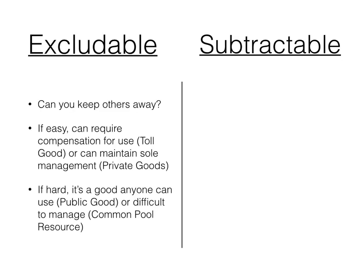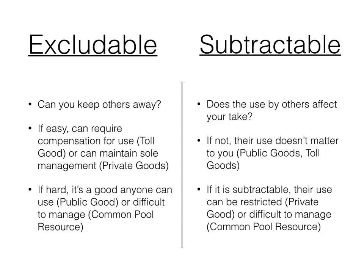Here's the difference between excludable and subtractable. For excludable goods, the question is: can you keep others away? If it's easy to keep others out, you can require compensation for use, like toll goods, or maintain sole management, like private goods. If it's hard to exclude people, like breathing, that's a public good — or it can become a common pool resource problem. For subtractable goods, we ask: does the use of others affect how much you can take? If it doesn't, their use doesn't matter much, like public goods or toll goods. If it is subtractable, their use can either be restricted, like a private good, or difficult to manage, like a common pool resource.